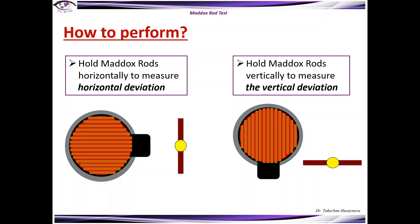So in case when those cylinders are directed horizontal way the patient will see the vertical line, and when the cylinders are directed in vertical direction then the patient will see the horizontal line.